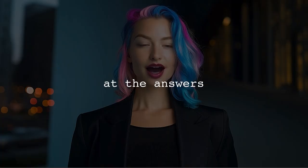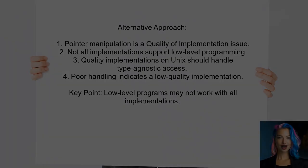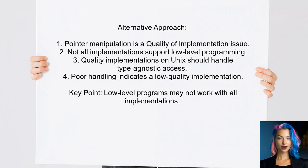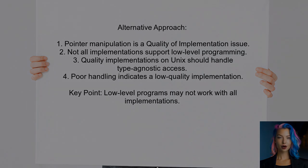Now let's look at the answers provided by other users. One user explains that the standard allows for different implementations when it comes to pointer manipulation. While not all implementations are required to support low-level programming, a quality implementation — especially on Unix systems — should handle type-agnostic structure access. If an implementation struggles with this, it may not be suitable for low-level programming, but that doesn't necessarily mean it's a defect.